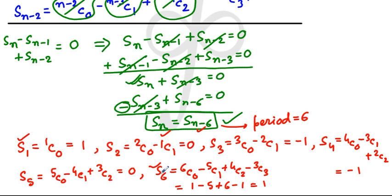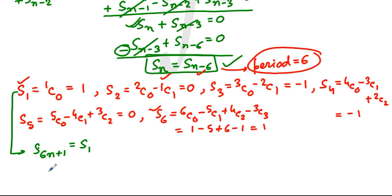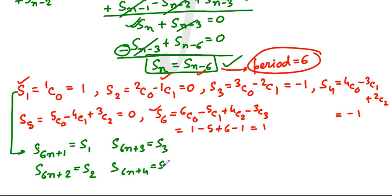From S1 to S6 the values are computed, and from S7 onward they repeat due to the periodicity of 6. So S(6n+1) equals S1 = 1, meaning S1 equals S7 equals S13 equals S19 and so on. Similarly, S(6n+2) equals S2 = 0, S(6n+3) equals S3 = -1, S(6n+4) equals S4 = -1, S(6n+5) equals S5 = 0, and S(6n) equals S6 = 1. In this way, we can compute the sum for any value of n.